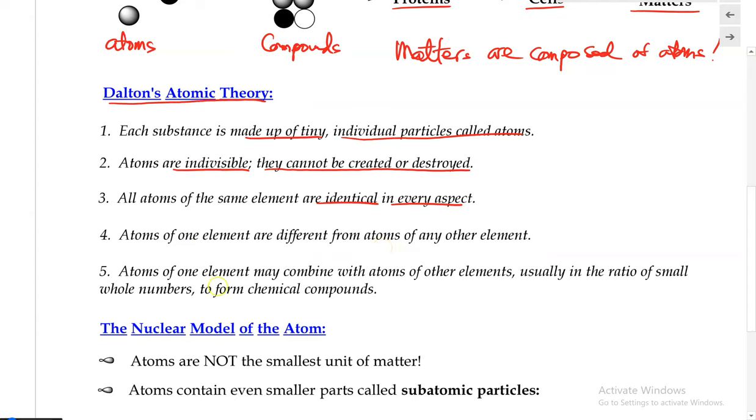And atoms of one element may combine with atoms of other elements, usually in whole number ratios to form chemical compounds. So these are the five very important statements from Dalton's atomic theory that make sure you're able to recognize.